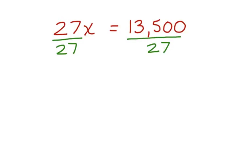27 divided by 27 is 1. These cancel, bring down the x. 13,500 divided by 27 is $500.